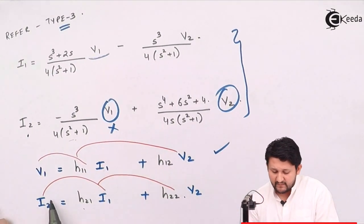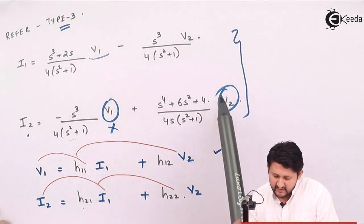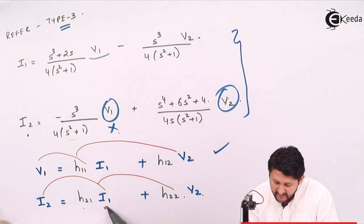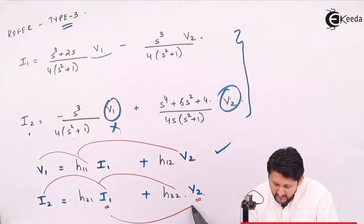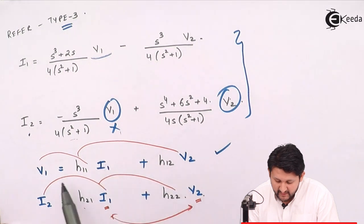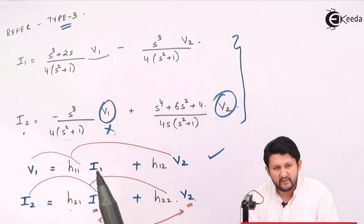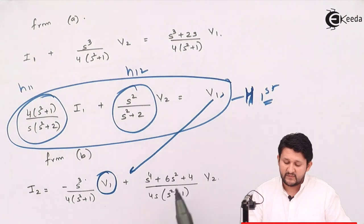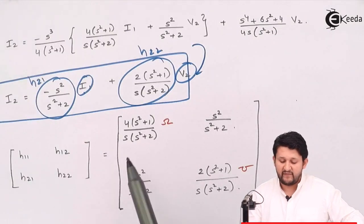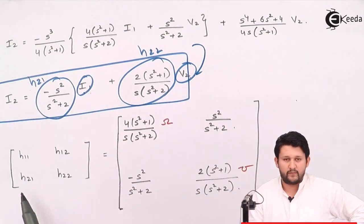For the second H parameter equation, I need I2 in terms of I1 and V2. I already have the I2 equation from Y parameters, but it is in terms of V1 and V2. V2 is required, but V1 is not. So I substitute the first H parameter equation — V1 in terms of I1 and V2 — into the second Y parameter equation to get the second H parameter equation. The coefficient of I1 will be H21 and the coefficient of V2 will be H22.